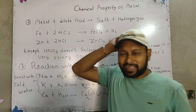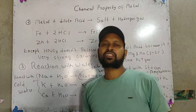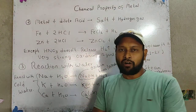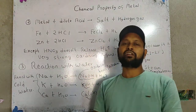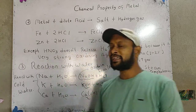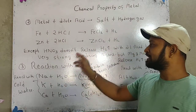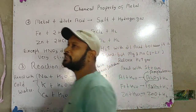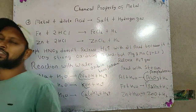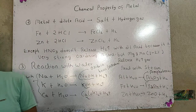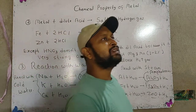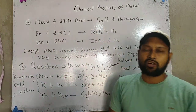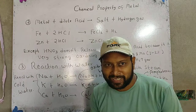But there is one acid which does not release hydrogen gas. That acid is nitric acid. When nitric acid reacts with a metal, it does not release hydrogen gas because it is a very strong oxidizing agent.